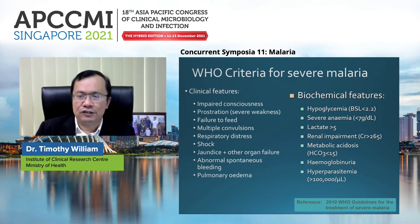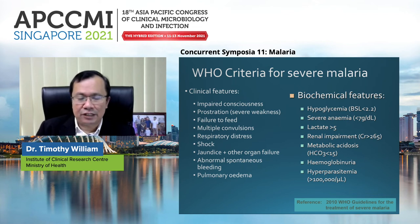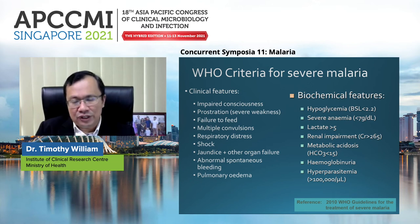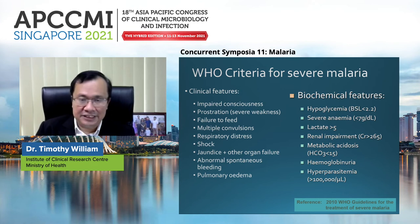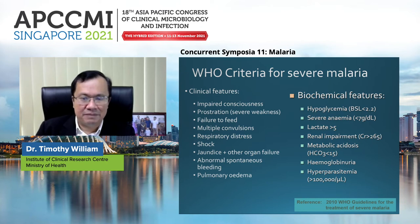These are the WHO criteria for severe malaria based on clinical and biochemical features. The clinical features are impaired consciousness and any organ dysfunction. A person with malaria presenting with heart failure, CNS symptoms, respiratory distress, jaundice, or renal failure is classified as severe malaria. Biochemical features include hypoglycemia, severe anemia, hyperlactatemia, renal impairment, metabolic acidosis, hemoglobinuria, and hyperparasitemia.